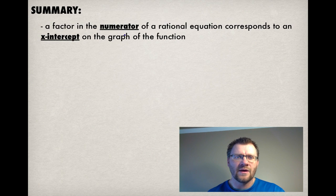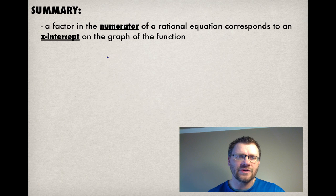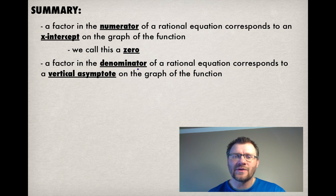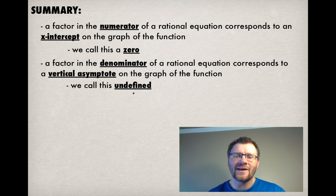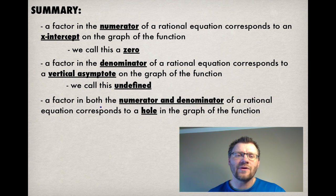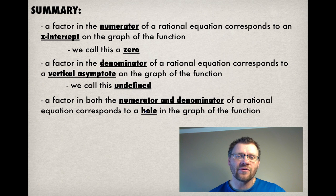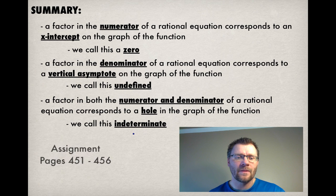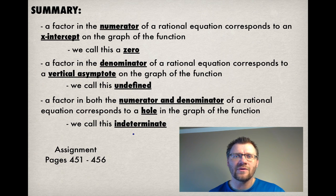In summary: a factor in the numerator of a rational equation corresponds to an x-intercept on the graph, called a zero. A factor in the denominator corresponds to a vertical asymptote, which we call undefined. And a factor that appears in both the numerator and denominator corresponds to a hole in the graph, called indeterminate. Your assignment is pages 451 to 456. Good luck, and we'll see you in class.